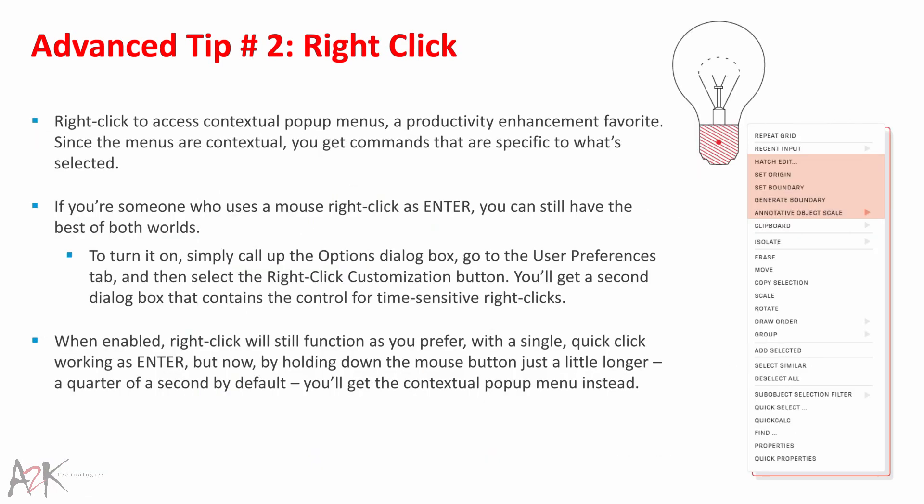Advanced Tip 2 – Right-Click. Right-click to access contextual pop-up menus, a productivity enhancement favourite. Since the menus are contextual, you'll get commands specific to what's selected. If you use right-click as Enter, you can still have the best of both worlds using the time-sensitive right-click feature. To turn it on, call up the Options dialog box, go to the User Preferences tab, and select the Right-Click Customization button.